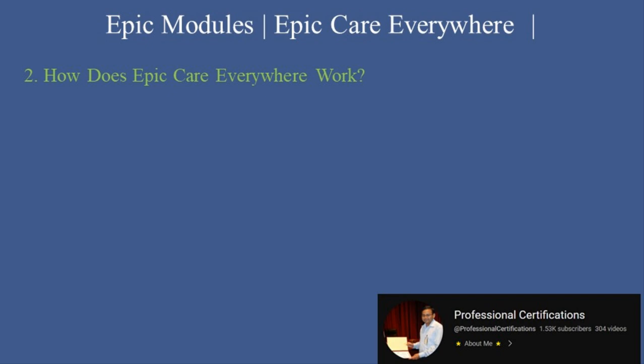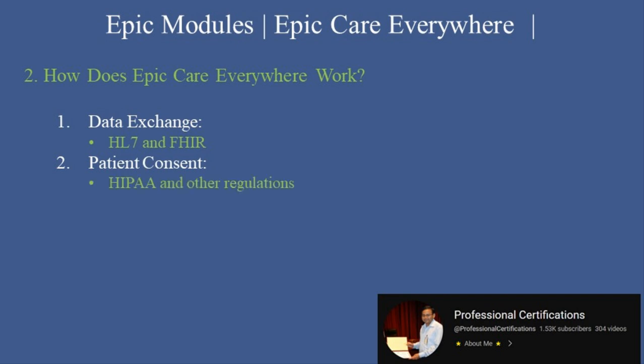How does Epic Care Everywhere work? Here's a simplified explanation of how Care Everywhere functions. First, Data Exchange: it uses standards like HL7 and FHIR to share data across Epic and non-Epic systems. Second, Patient Consent: patients must give consent for their data to be shared, ensuring compliance with HIPAA and other regulations.